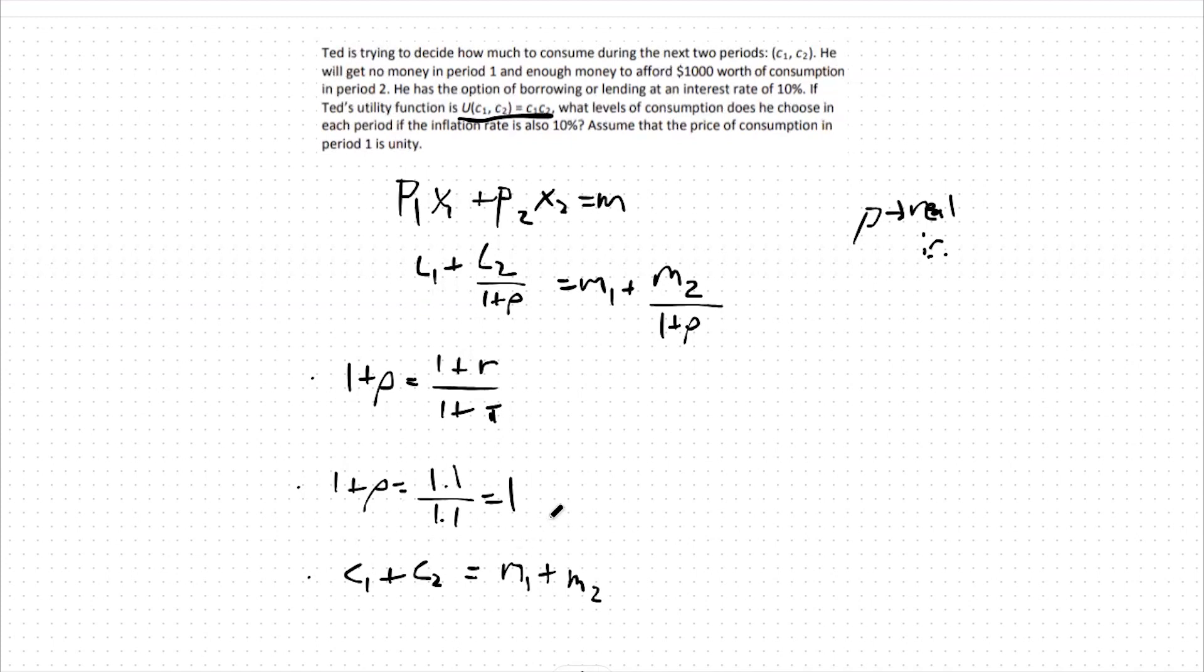From there, we can solve this pretty similarly to our classic setup with Cobb-Douglas. To start, let's take a look at this M1 and M2 dynamic. In this case, he gets no money in period 1, so M1 would be 0, and he gets $1,000 in period 2, so M2 would be 1,000. This means c1 plus c2 in this specific case is equal to 1,000.